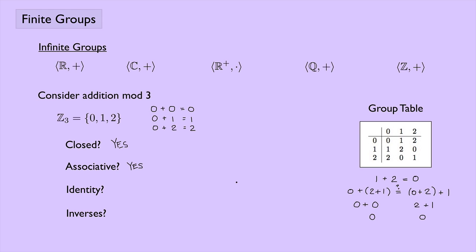Is there an identity element? The identity element is the thing that, when you perform the binary operation on it, you get back the same thing. Looking at the table, we can see that this column mirrors the left-hand side and this row mirrors the top, which tells us 0 must be our identity. If you perform the binary operation with 0, you get back whatever you started with: 1 plus 0 gives 1, 2 plus 0 gives 2, and it doesn't matter what order you do it in. A good way to find the identity in a group table is to look for the row and column that repeat the headers.